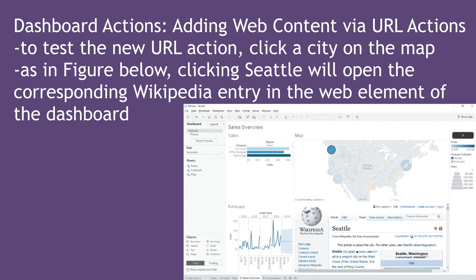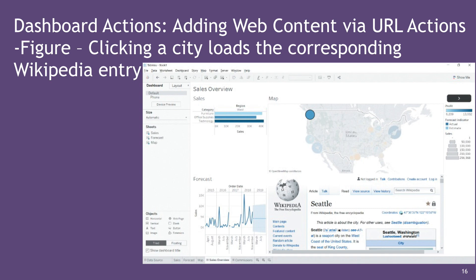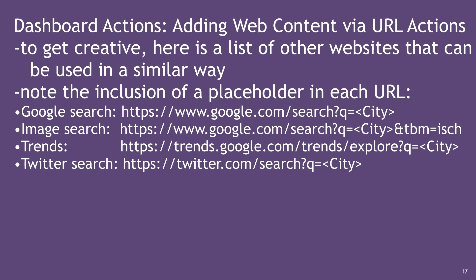To test the URL action, click a city on the map as shown in the figure. Clicking Seattle, for example, will open the corresponding Wikipedia entry page for Seattle.